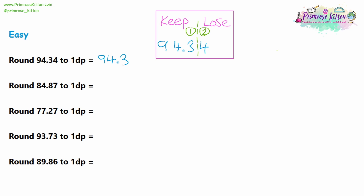Let's use the same method on question two — rounding 84.87. Label the decimal places: first decimal place and second decimal place. We're rounding to one decimal place, so rule off after the first decimal place. Keep the 8, the 4, and the point 8; we are losing the 7. However, the first number we're losing is a seven — that is five or higher, so we are rounding up. The answer is 84.9.